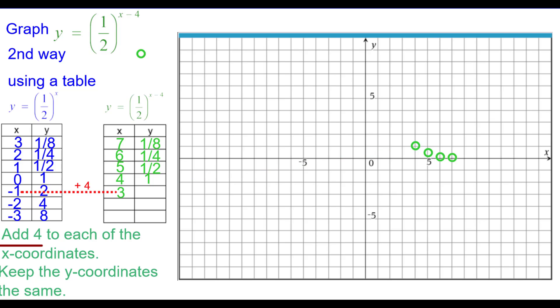Negative 1 plus 4 is 3, 2. Negative 2 plus 4 is 2, 4. And negative 3 plus 4 is 1, 8.